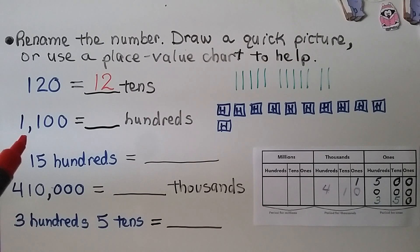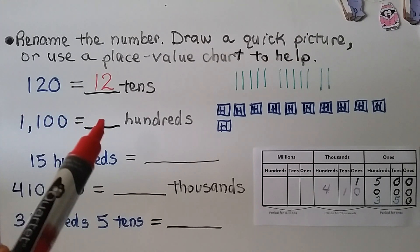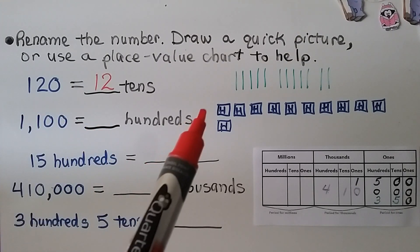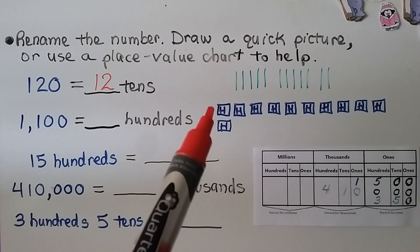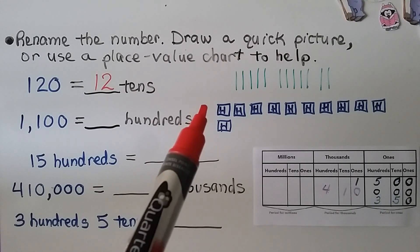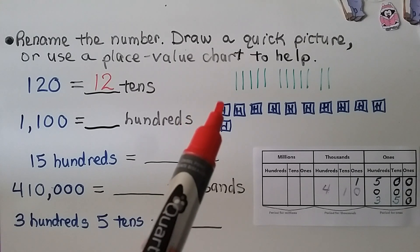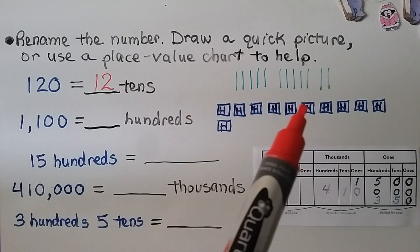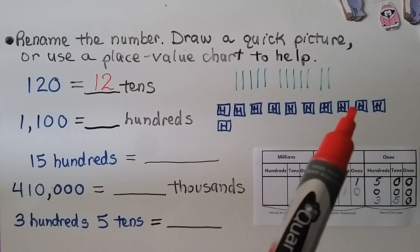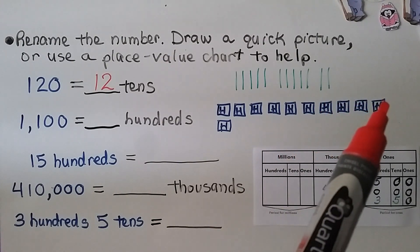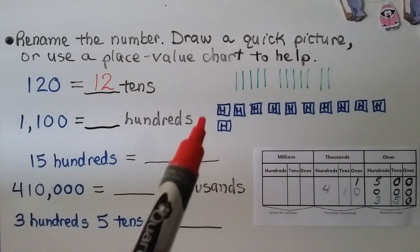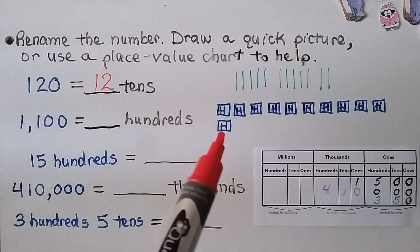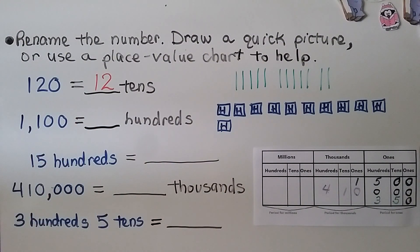We have 1,100 and need to know how many hundreds that would be. We make little boxes with an H for hundred in each one. We count: 100, 200, 300 ... up to 1,000, then 1,100. That's 11 hundreds. So 1,100 equals 11 hundreds.